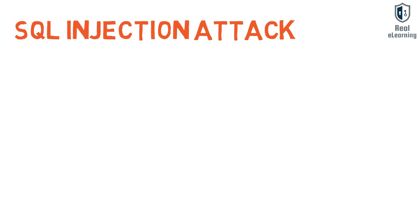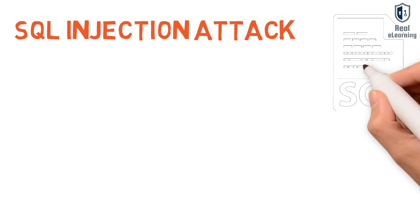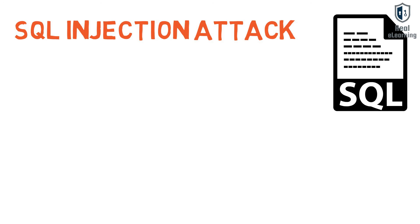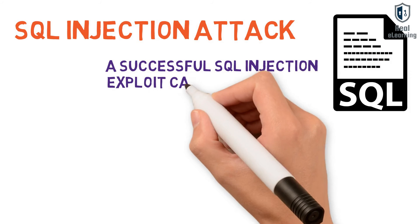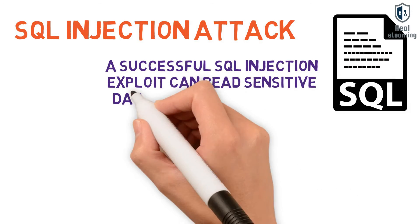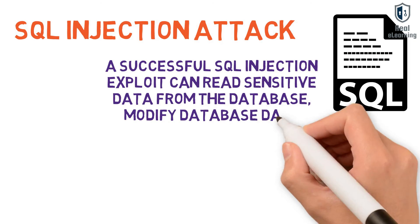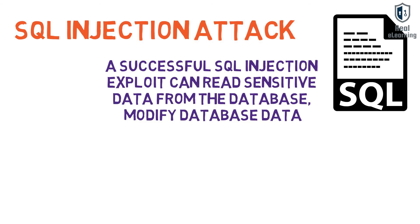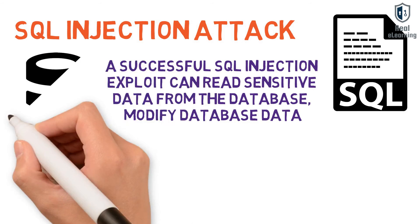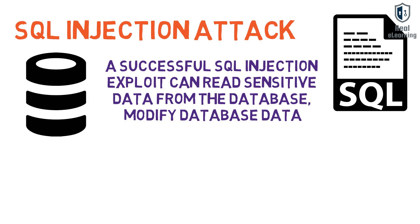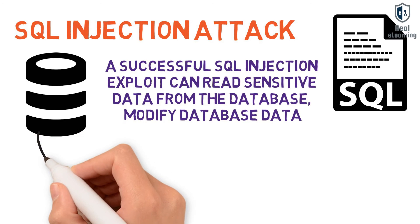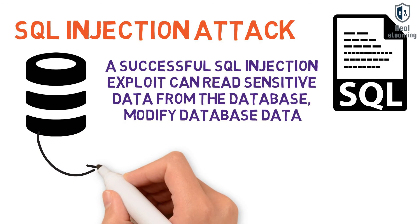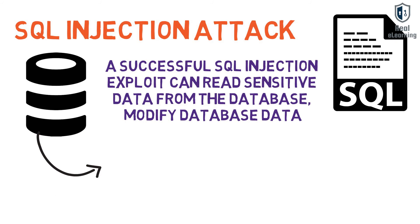A SQL injection attack consists of insertion or injection of a SQL query via the input data from the client to the application. A successful SQL injection exploit can read sensitive data from the database, modify database data, insert, update, delete, and execute administration operations on the database such as shutting down the DBMS, or recover the content of a given file present on the DBMS file system.